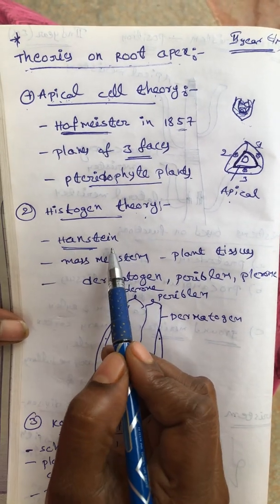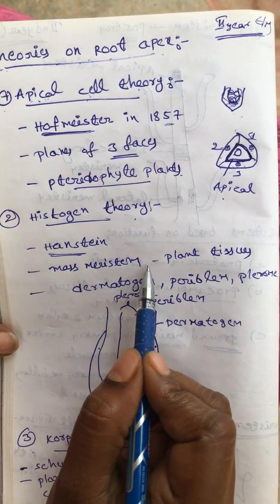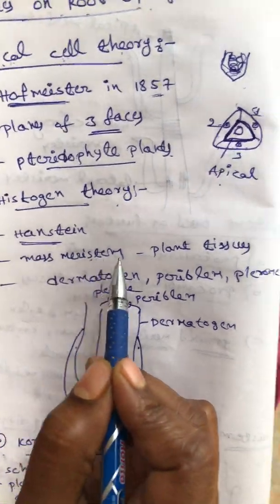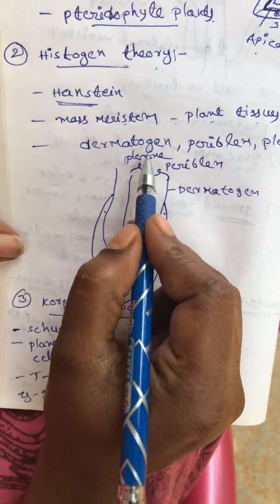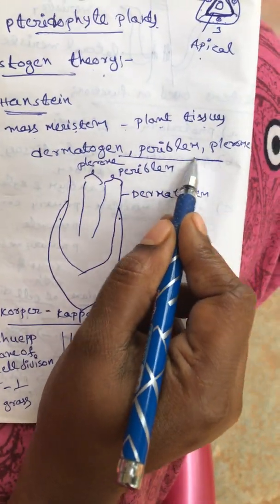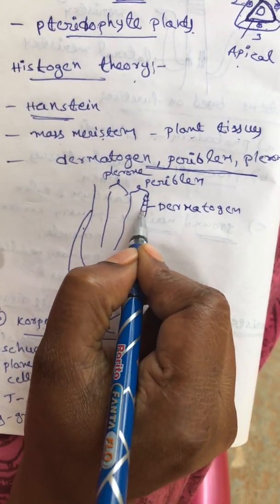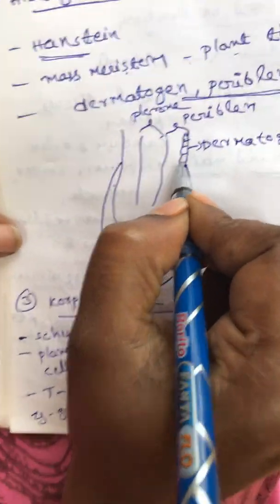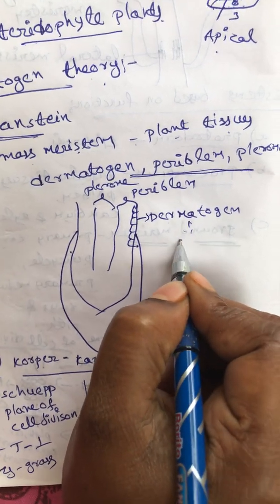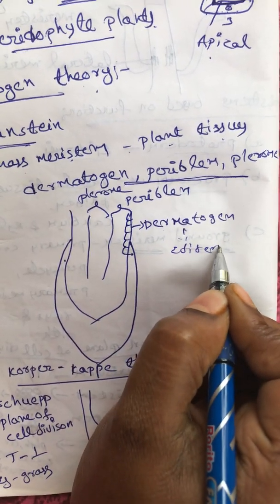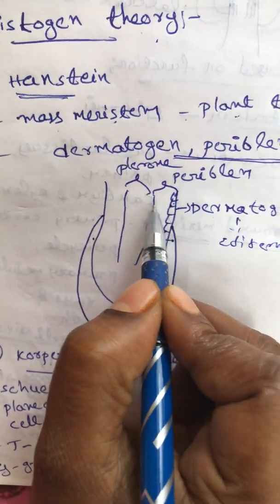Then, histogen theory. This histogen theory is proposed by Hanstein. Here, mass meristem is involved - mass meristem develops the plant tissues. This mass meristem is divided into three types of cells. The first one is dermatogen - dermatogen is nothing but the outer surface cells. These dermatogen cells later divide and redivide to produce the epidermis of the root.